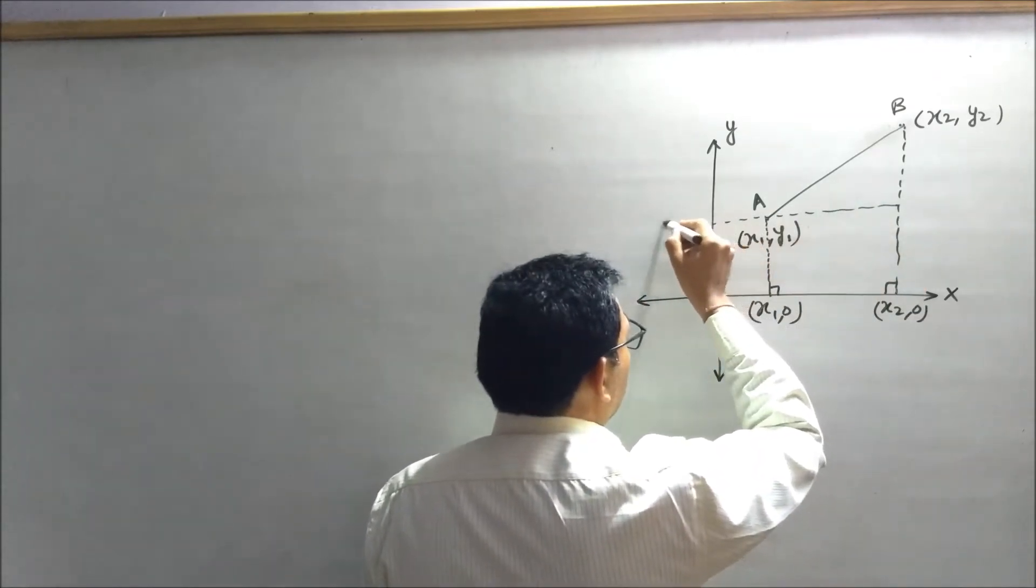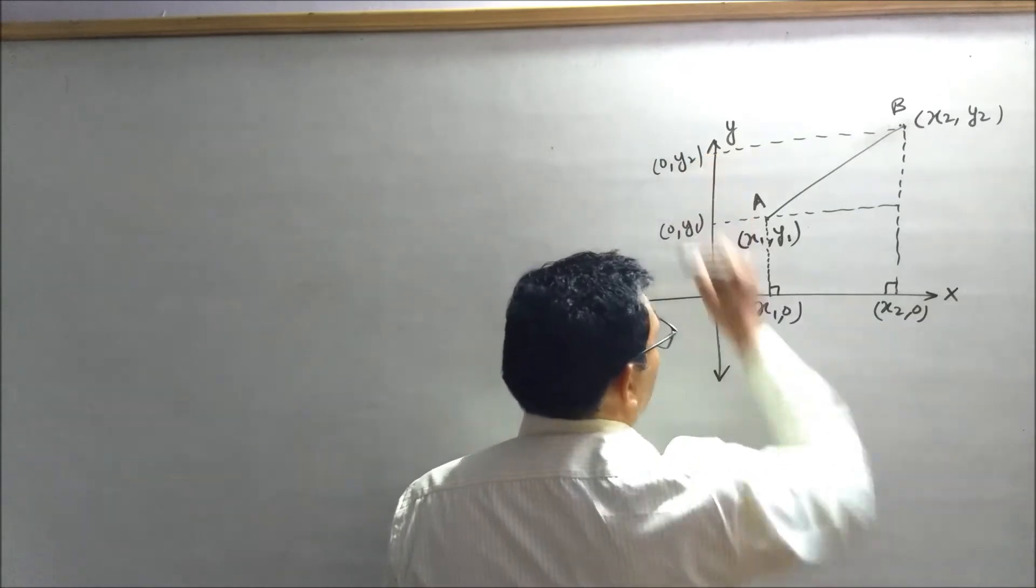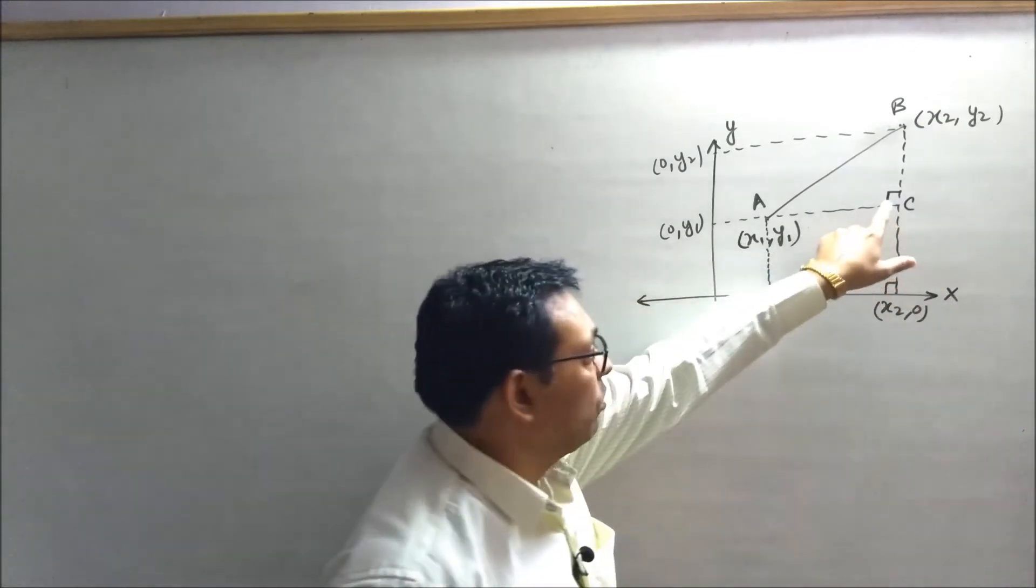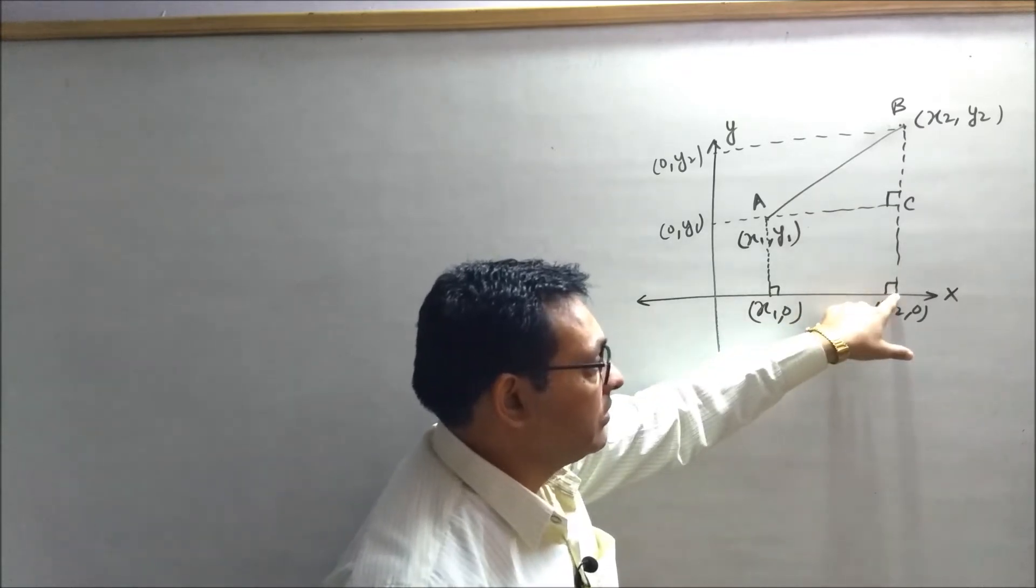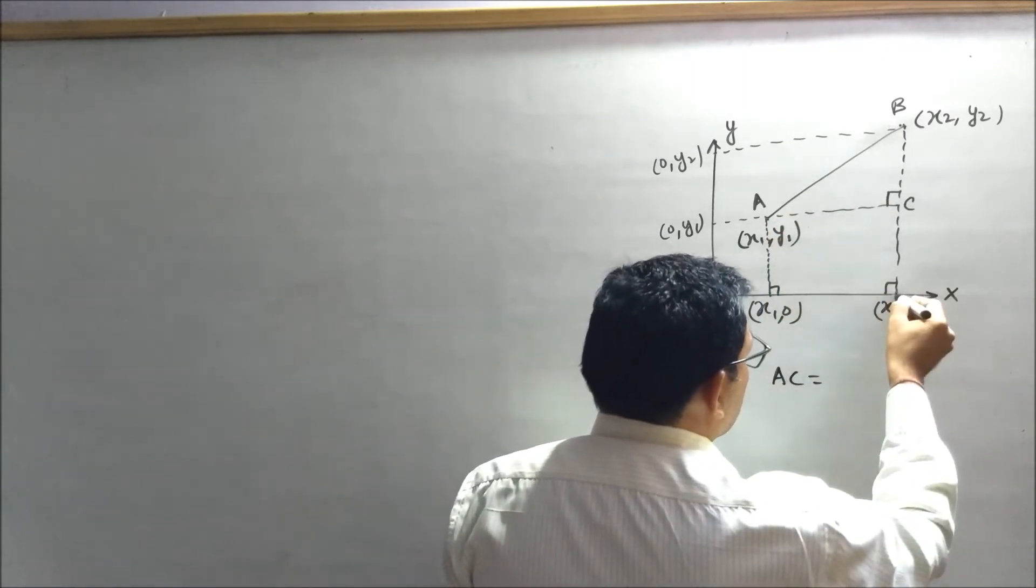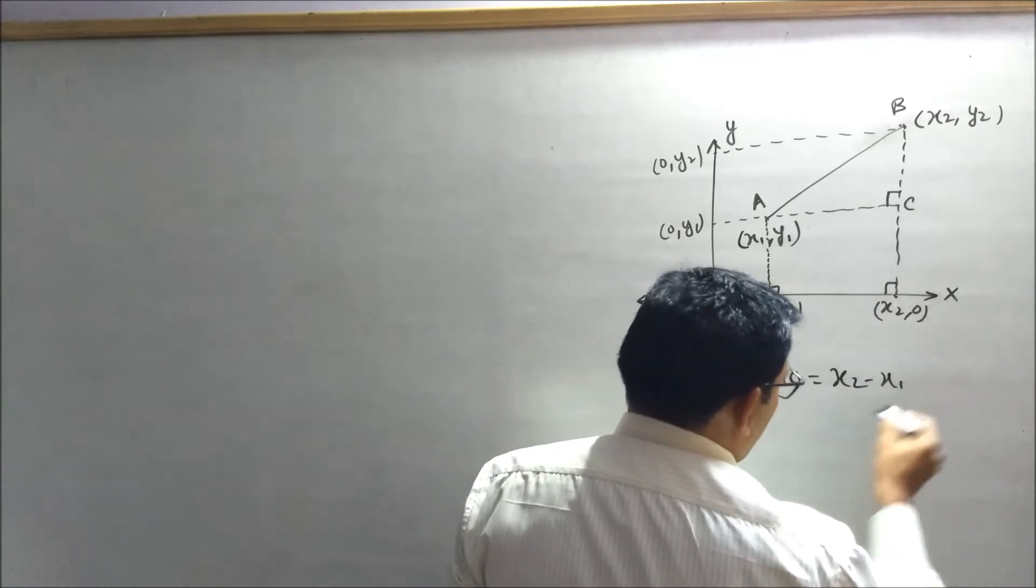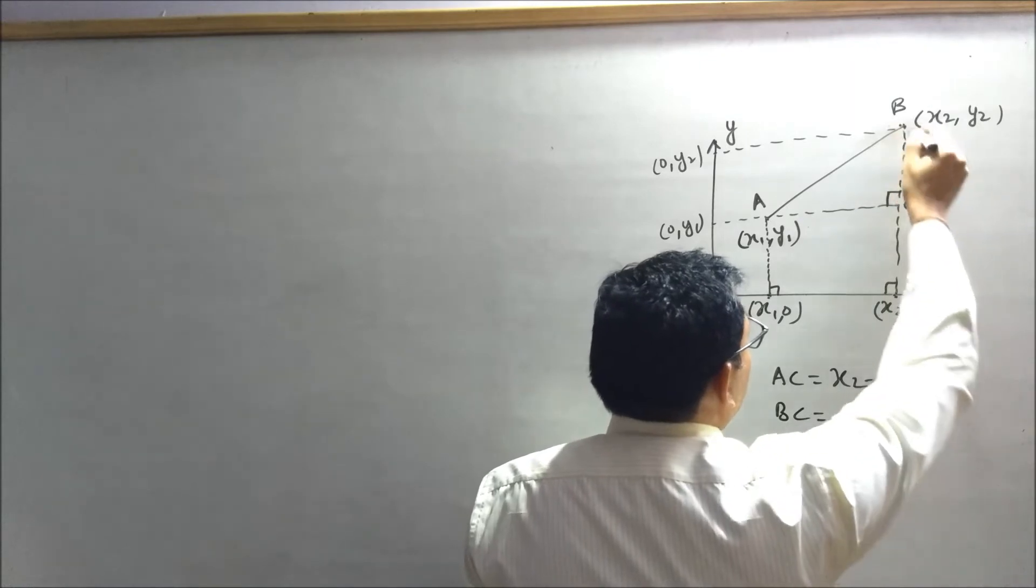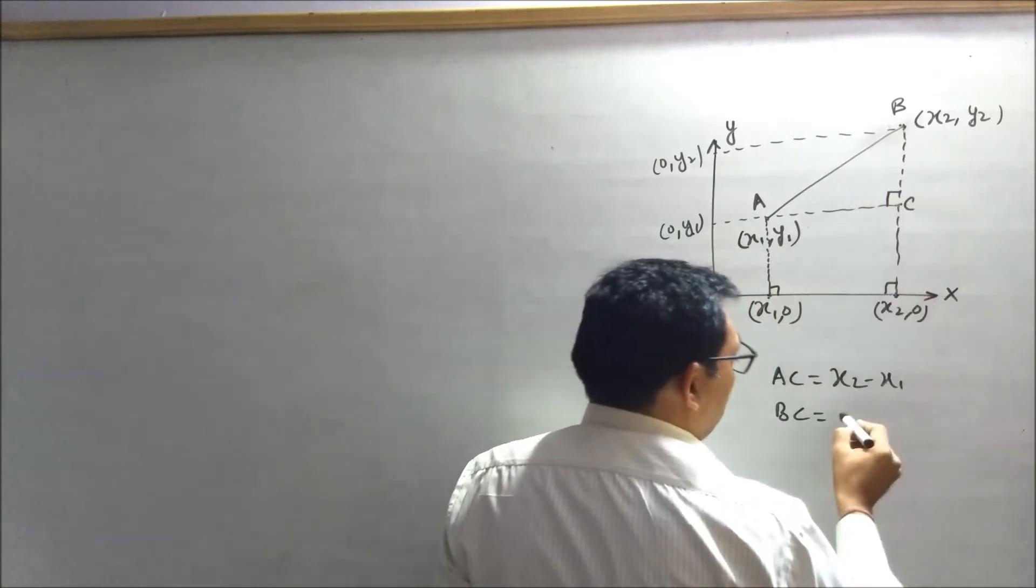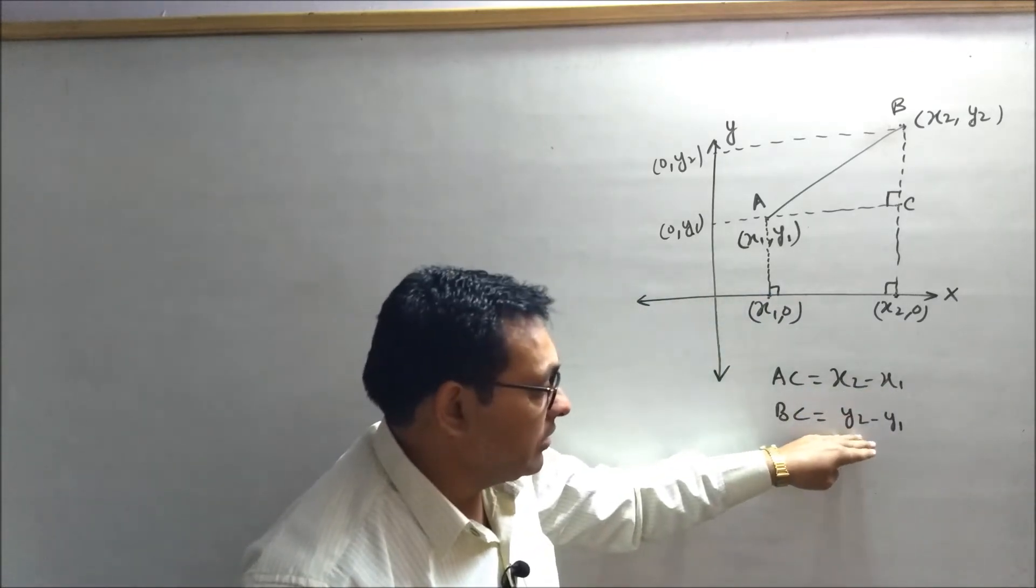This is y1, 0. So these are corresponding angles. Now we have to find out the distance. This is x2 and this point is x1. So AC will be x2 minus x1. So AC equals x2 minus x1, and BC will come out as y2 minus y1.